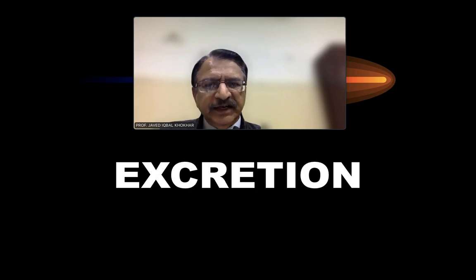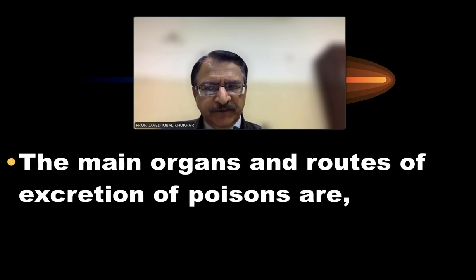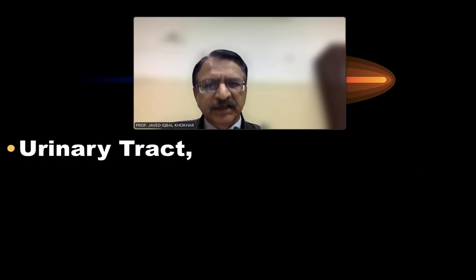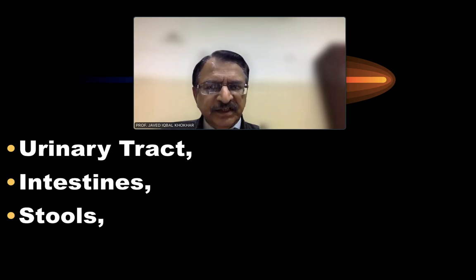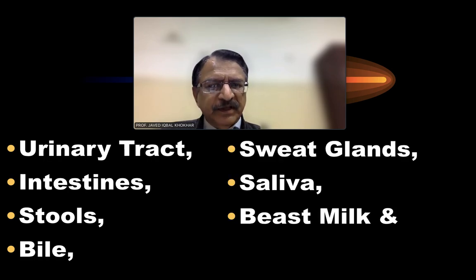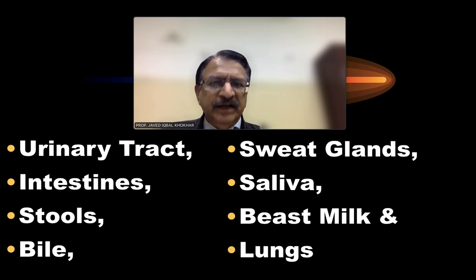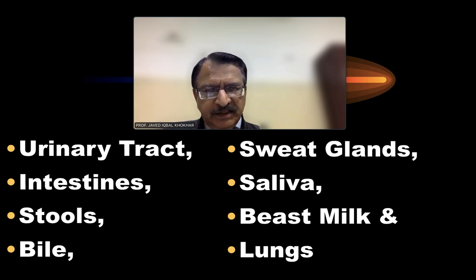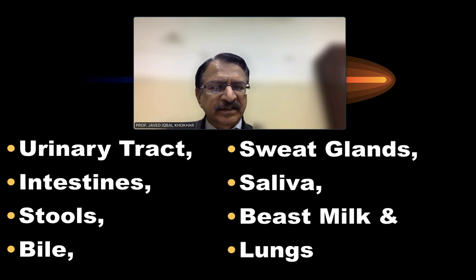Then the poisons are excreted out of the body through the urinary tract, the intestines, the stools, the bile, the sweat glands, saliva, breast milk, and the lungs. These are the various routes of excretion through which, after performing their action, poisons get eliminated from the body.